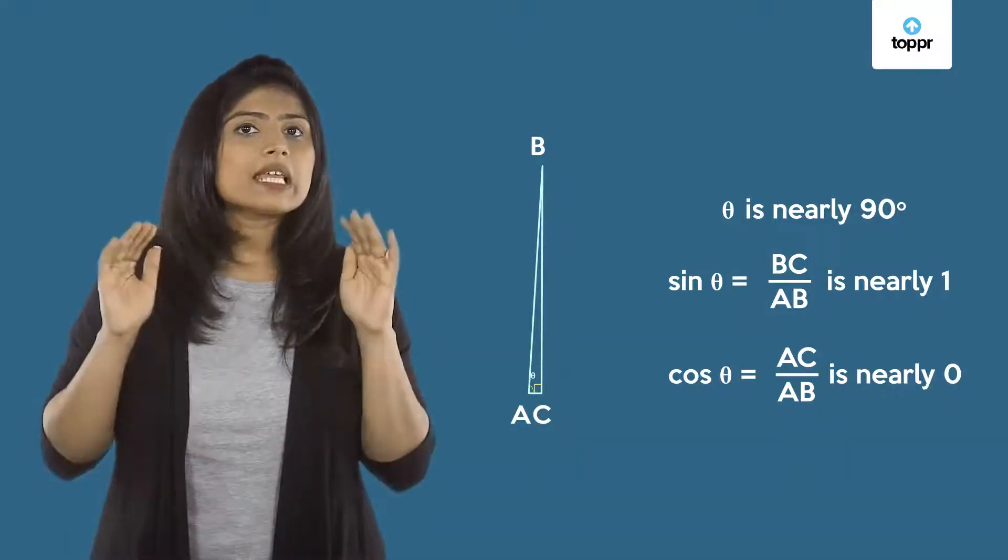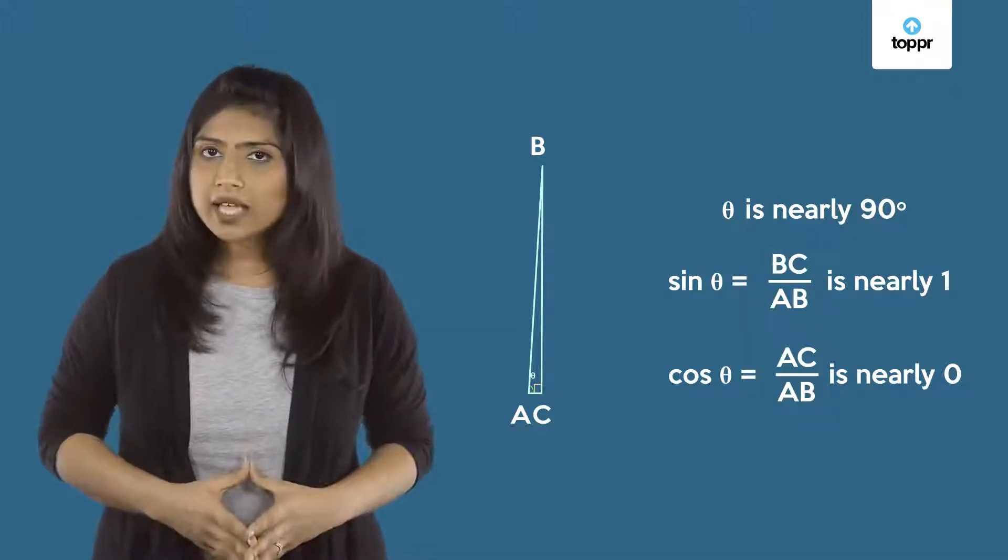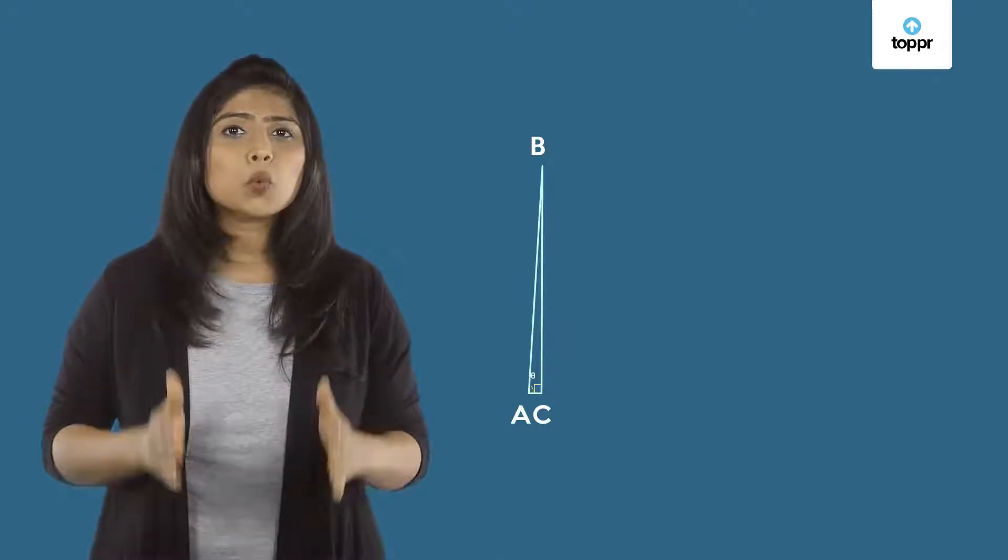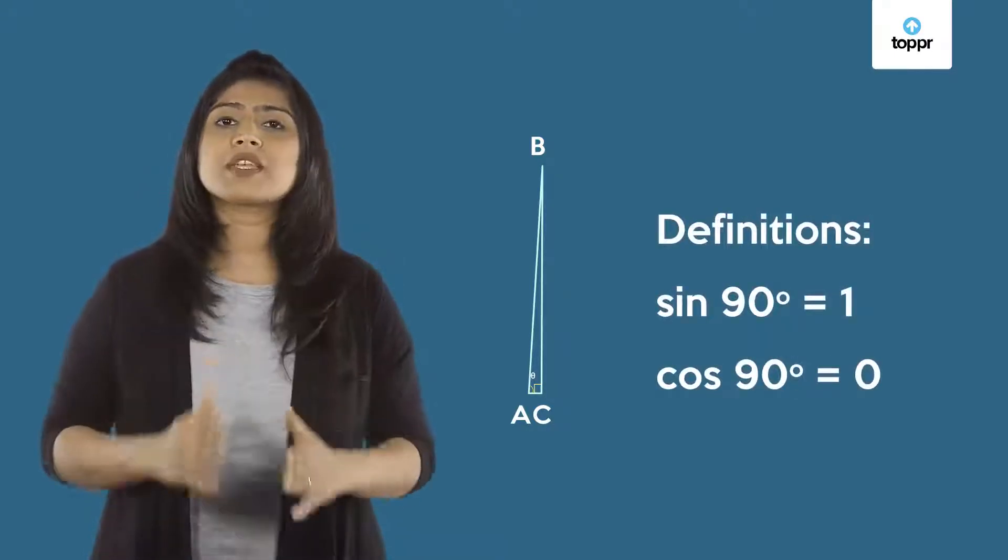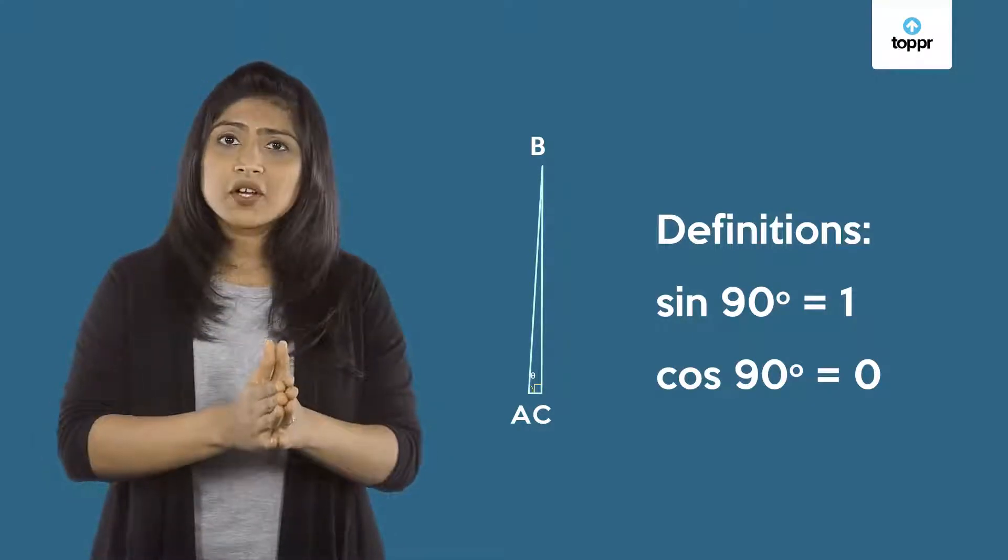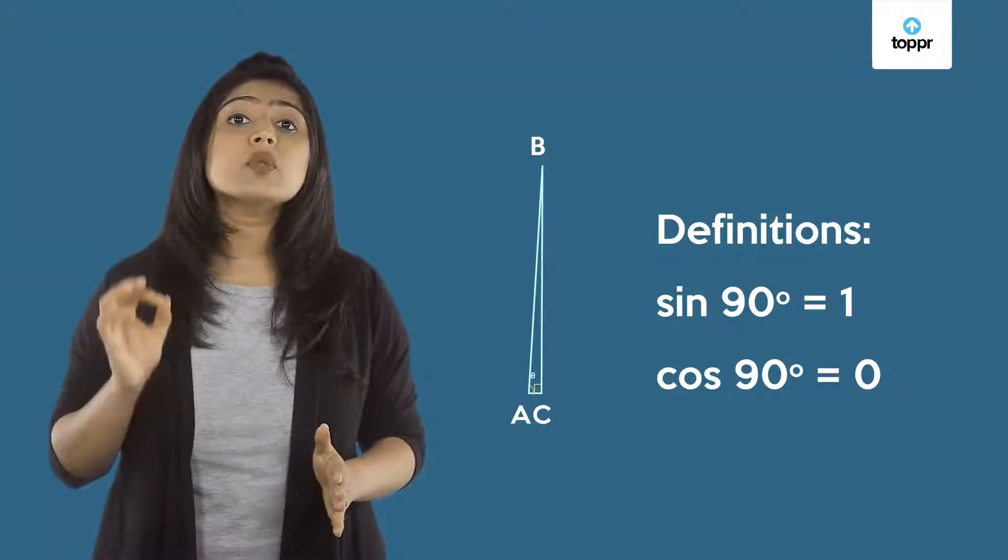Now there can never be two 90 degree angles in a triangle. But just as in the case of 0 degrees, we can also define the trigonometric ratios for 90 degrees based on their behavior when theta is close to 90 degrees.